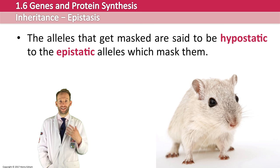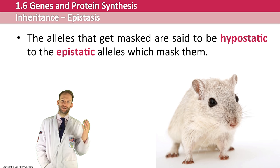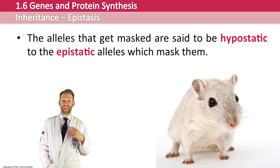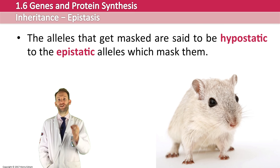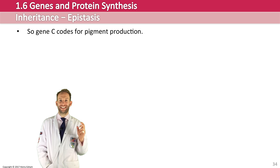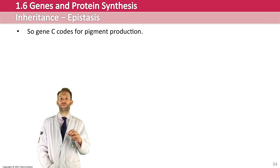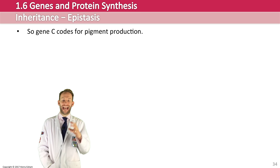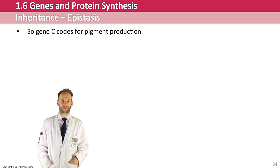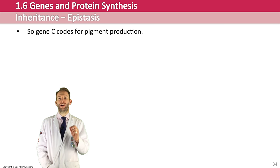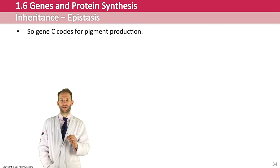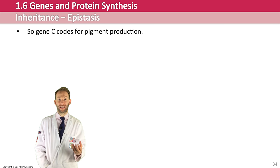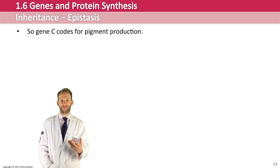Fur colour in mice is a nice example of this. It's actually controlled by two genes, gene A and gene C. Gene C is epistatic to gene A — gene C is the dominant one, masking gene A. Gene A is hypostatic. Gene C codes for pigment production. If the mouse has dominant C then it will be able to produce pigment.